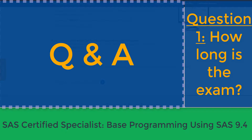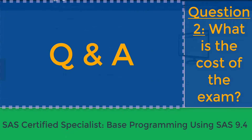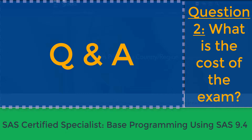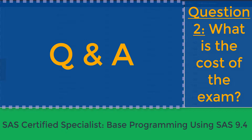The upgrade exam is less expensive — about 75 minutes, 18 to 22 questions, and costs around $75 US dollars. You can use exam ID A00-233 for that. I'll put a link in the description. If this is your first time, the cost is $180 US dollars for most countries, including the US and India.